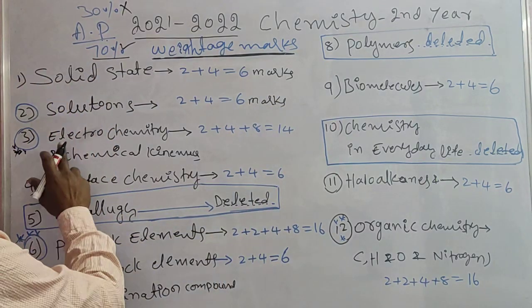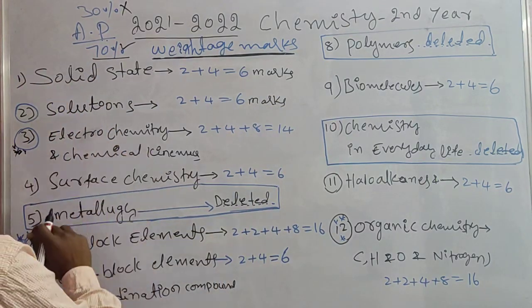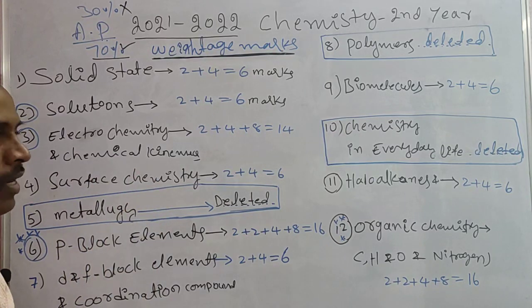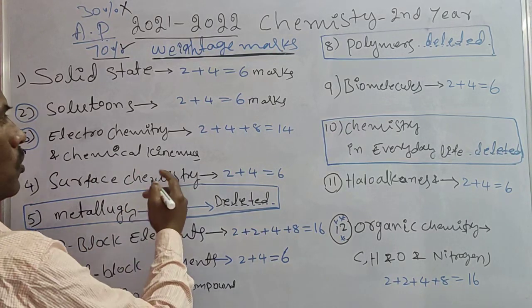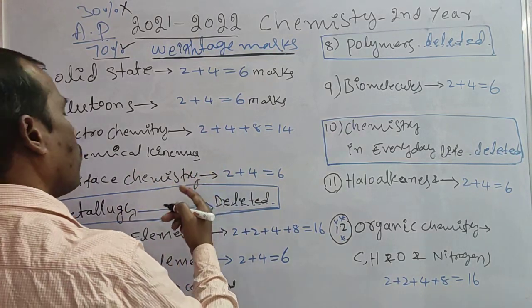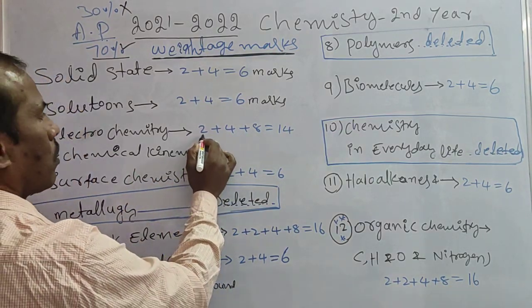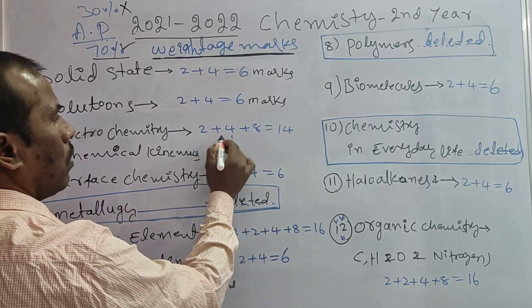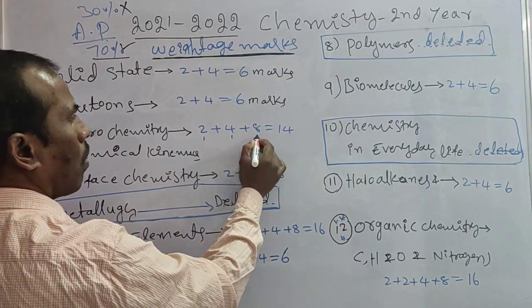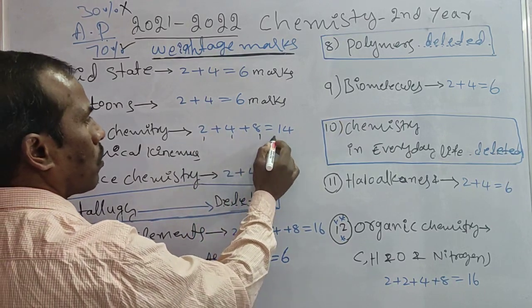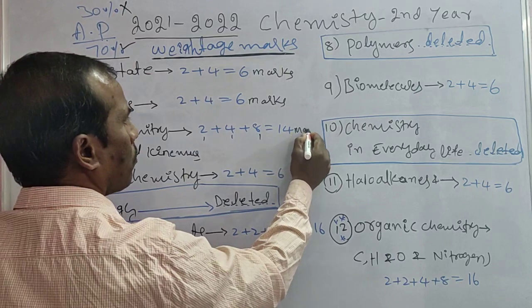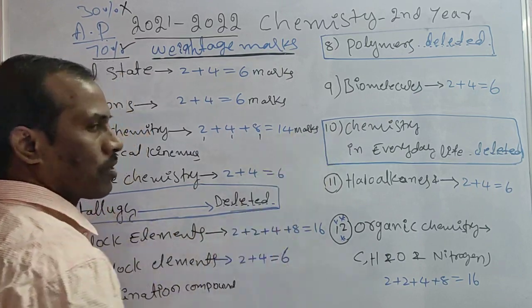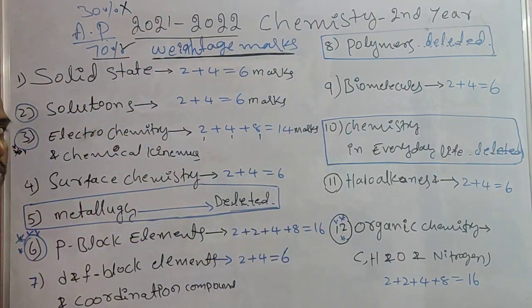Third topic: Electrochemistry and Chemical Kinematics. Total marks here are 14 marks. This is one of the highest weightage chapters.